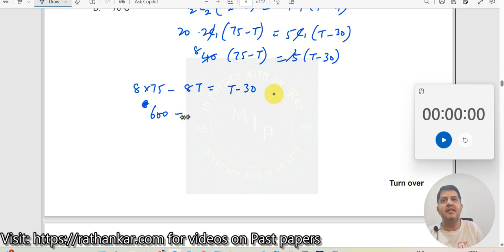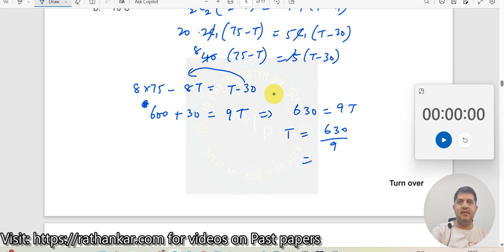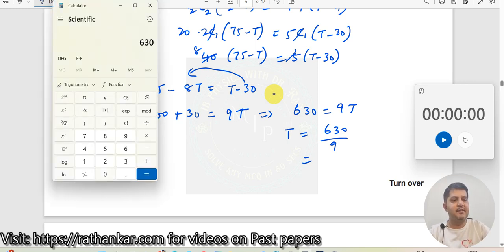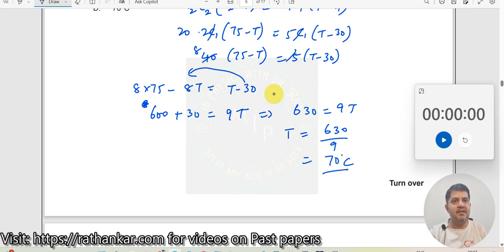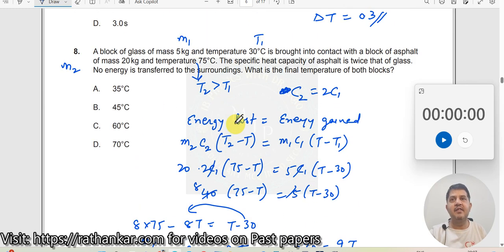This minus 30 comes this way, so this becomes plus 30 is equal to 9T. So this implies 600 plus 30 is 630 is equal to 9T. T should be equal to 630 divided by 9. 630 divided by 9 will be 70, so the final temperature should be 70 degrees centigrade. There is 70 here, 70 is option B.